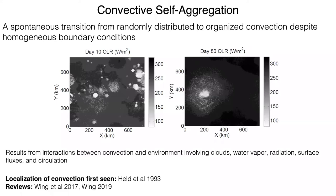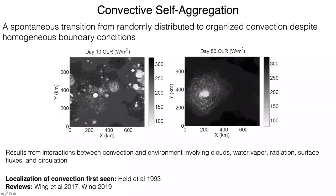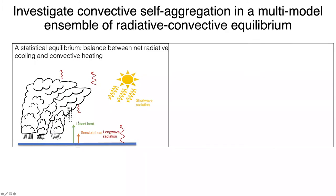This spontaneous localization of convection was first seen in a paper by Held et al. in 1993, and I've written a couple of reviews on it in the last couple of years. One of the tools I'm going to use in this presentation to investigate self-aggregation are simulations of radiative convective equilibrium. This schematic shows the different components of RCE: we have shortwave radiation from the sun heating the surface and atmosphere, which then cool by emitting longwave radiation. That state is strongly unstable to convection, so we have turbulent convective motions and fluxes of latent and sensible heat from the sea surface to the atmosphere.